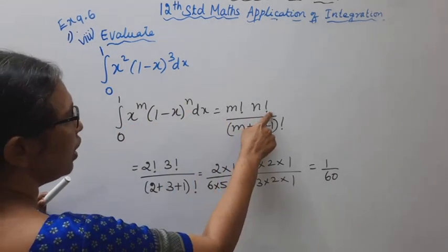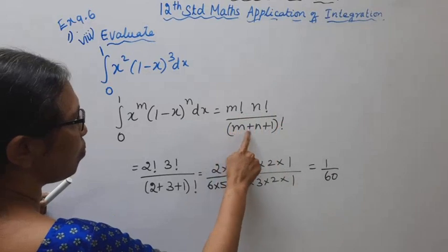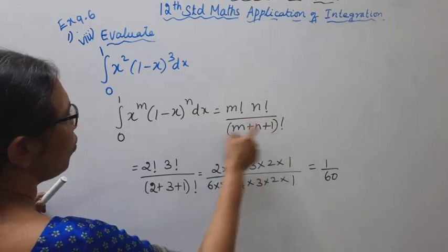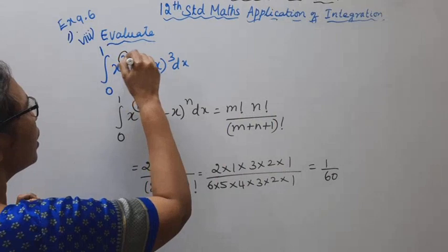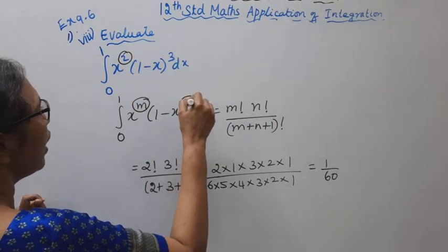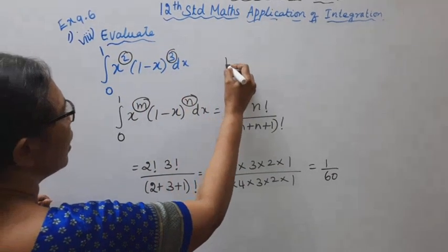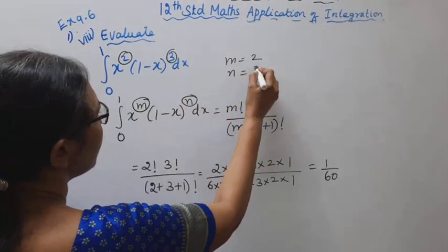Will be m factorial into n factorial divided by m plus n plus 1 factorial. Here m, m is 2, n is 3. m equal to 2, n equal to 3.